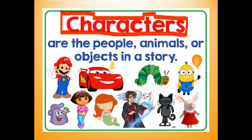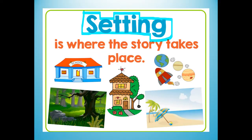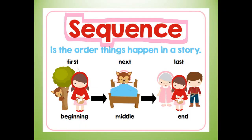Characters — what are the characters? Characters are the people, animals, or objects in a story. What is the setting? The setting is where the story takes place. Sequence — what is the sequence? The sequence is the order things happen in a story. You're going to write these sequence words when you write the retell: first, next, last. That is related to the beginning of the story, the middle of the story, and the end of the story.